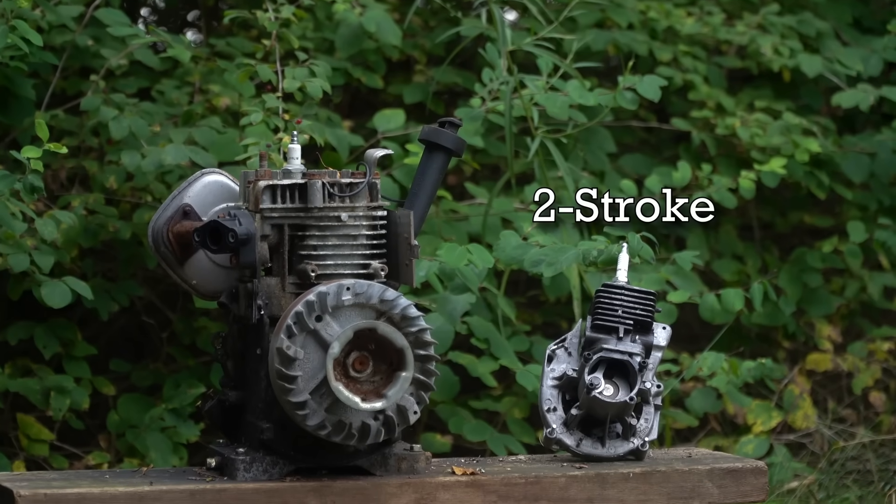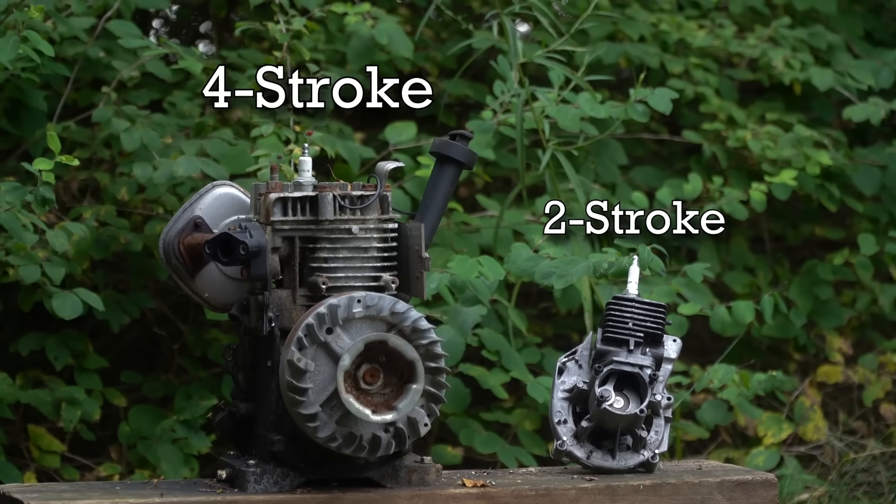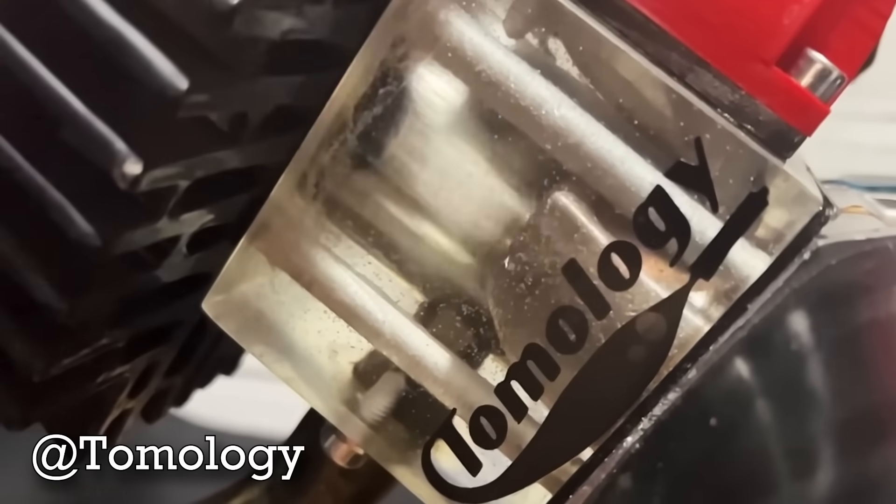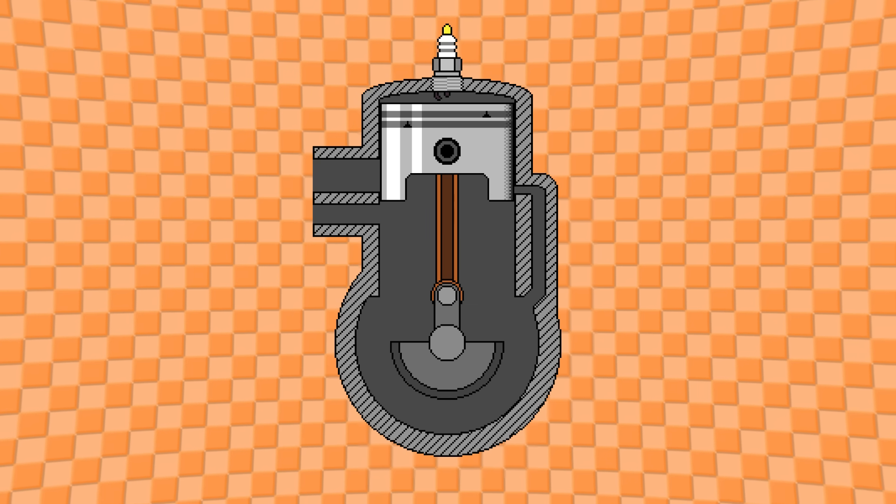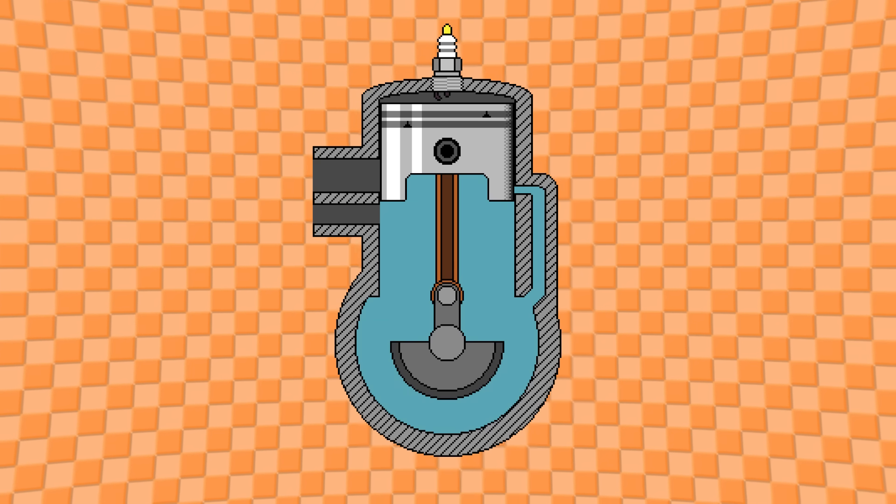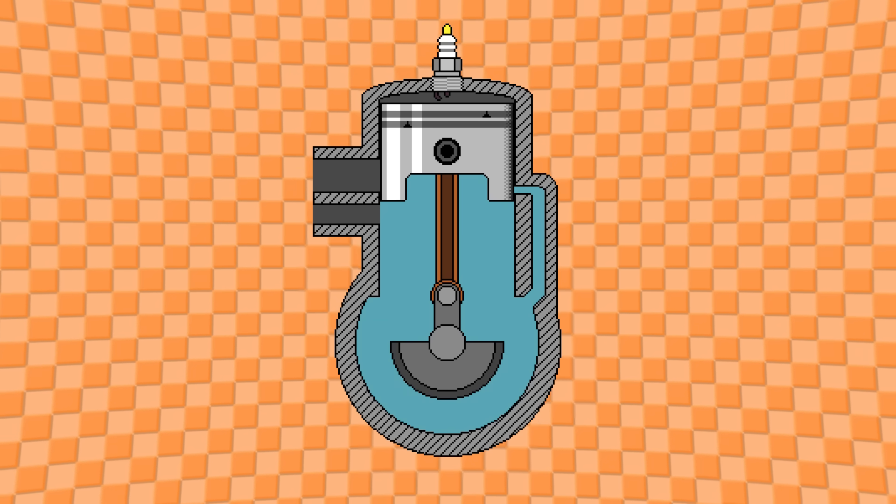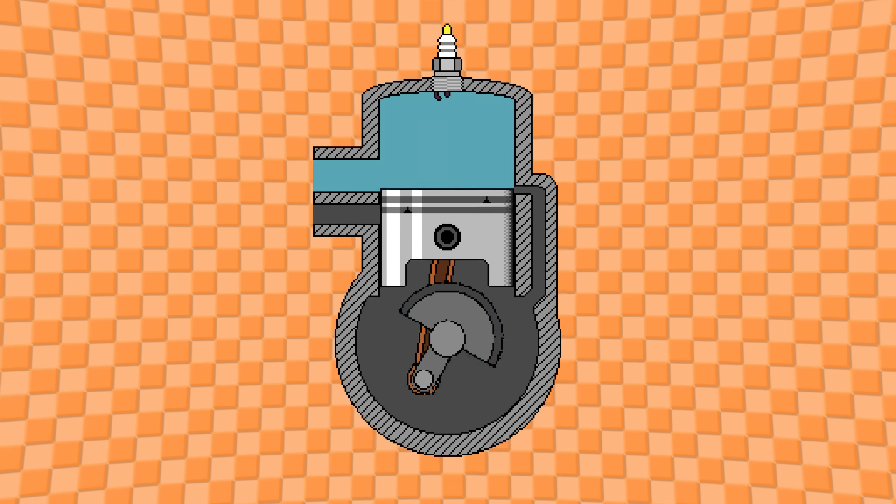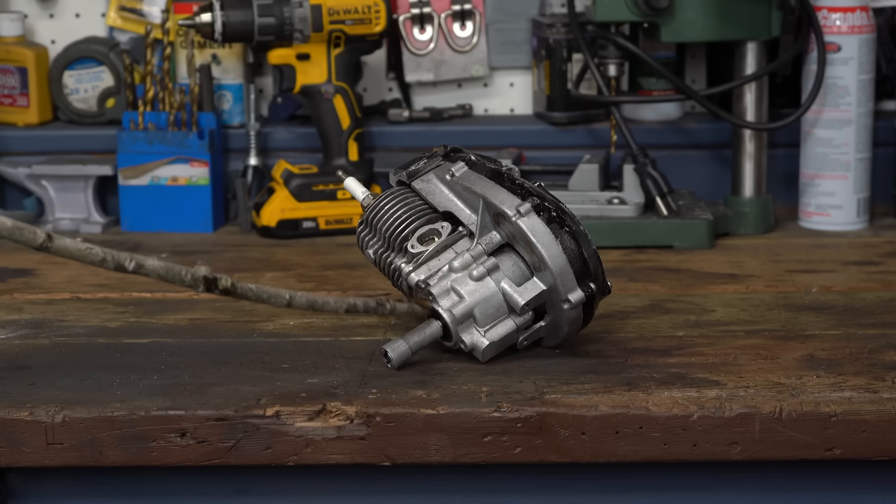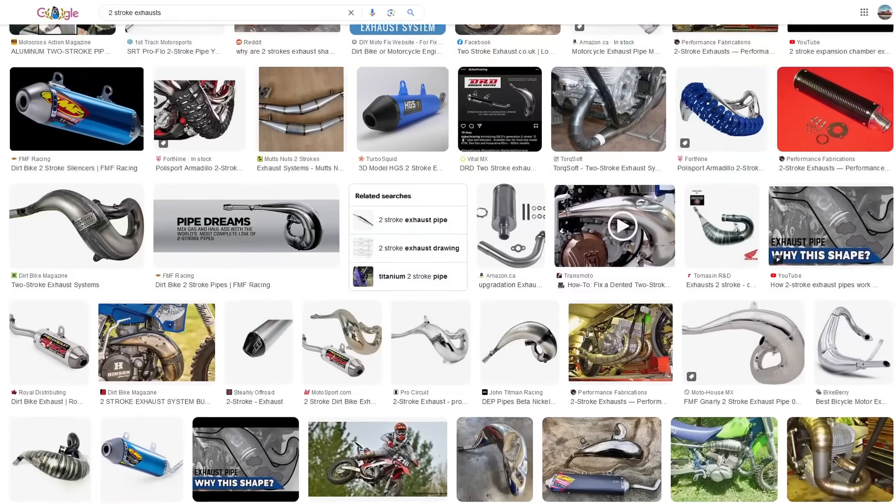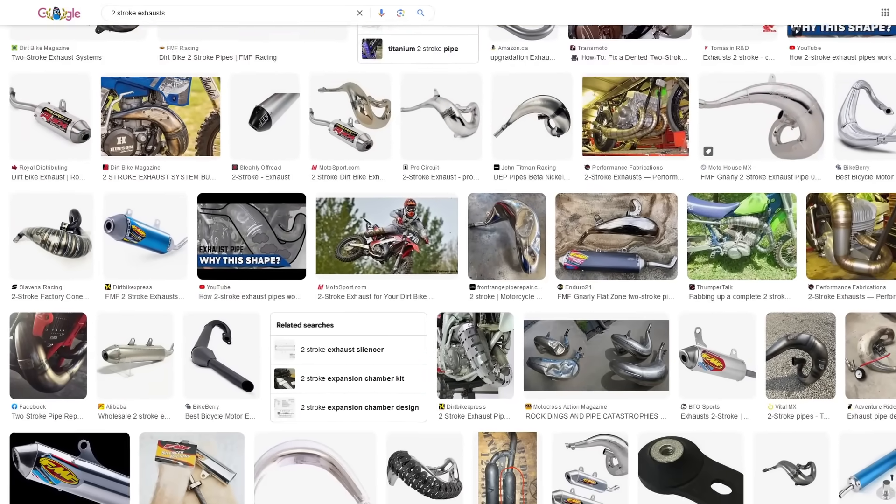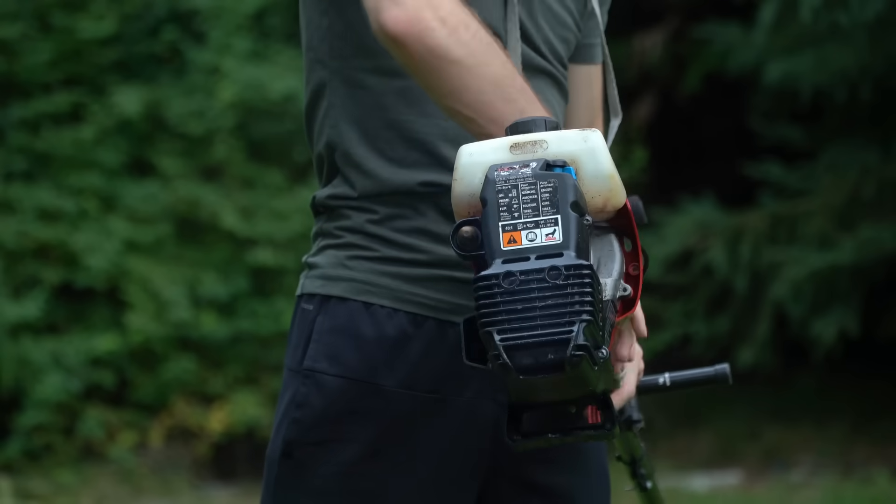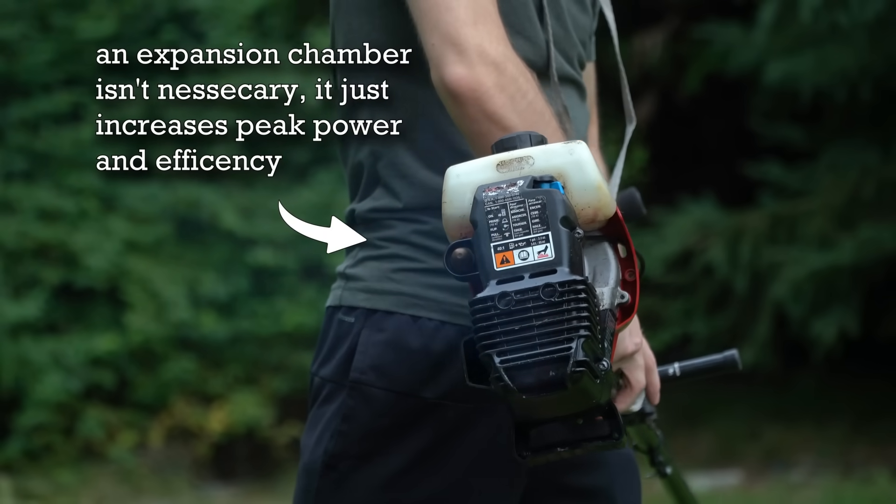Now what separates the two-stroke engine from its counterpart is that instead of combustion occurring every four piston strokes, it occurs every other. When the piston rises up, it draws in air and fuel from the carburetor. Then as it goes back down, the mixture gets transferred into the cylinder, which then begins the cycle.